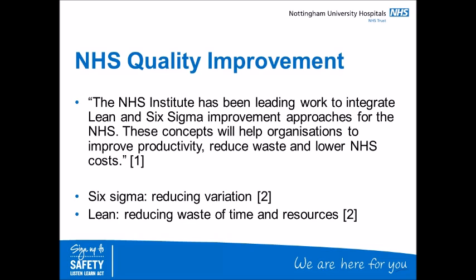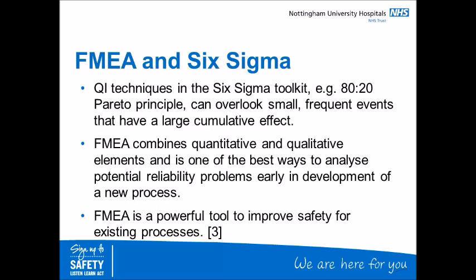In recent years, FMEA has become part of the Six Sigma toolkit advocated by the IHI and NHS Institute for quality improvement in healthcare, with an emphasis on reducing variation, improving productivity and reducing waste and costs. Other QI techniques in the Six Sigma toolkit, for example the 80-20 Pareto principle, can sometimes overlook smaller, more frequent events that have a large cumulative effect for safety. FMEA combines quantitative and qualitative elements and is one of the best ways to analyse potential reliability problems as well as risks early in development of a new process.